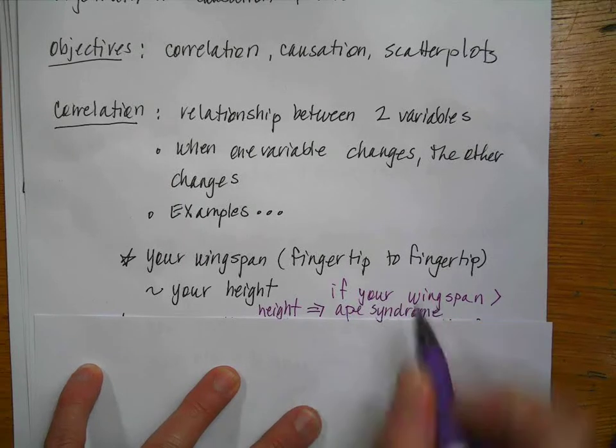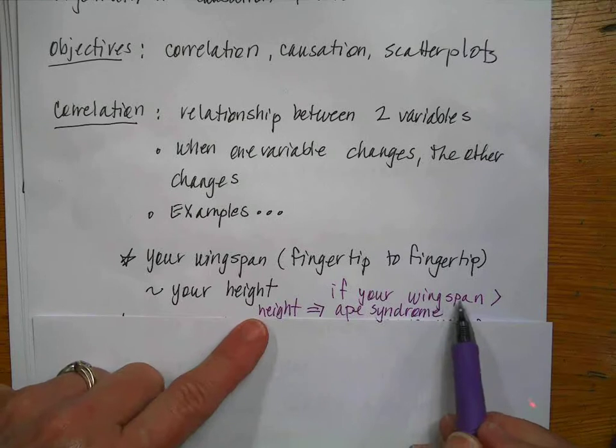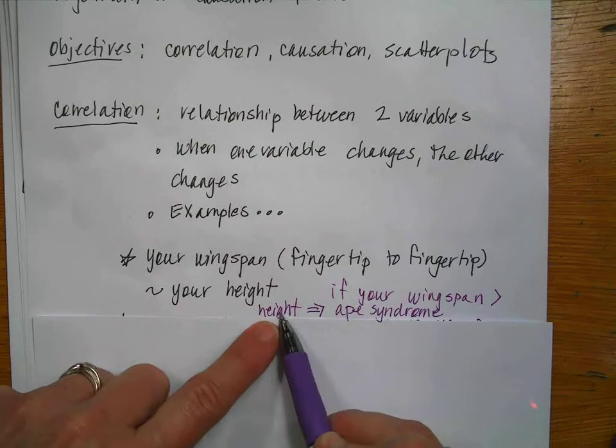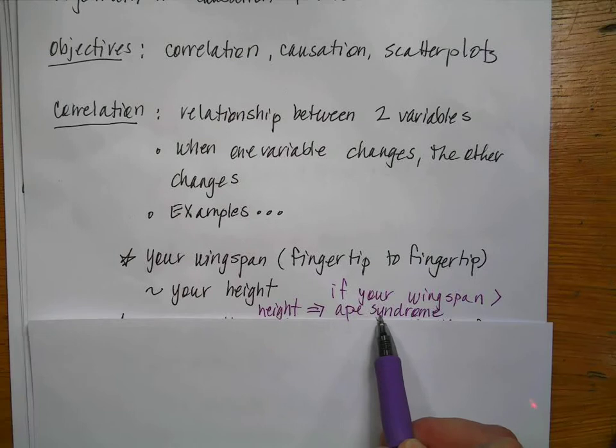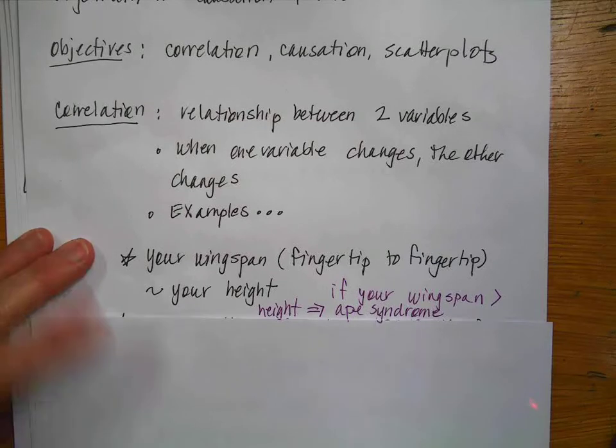I actually have a theory that, because this would be me, my wingspan is longer than my height even though I'm short. I have really long arms, which is ape syndrome. But I also think that might correlate to the sports that you choose. Basketball, ball sports, tennis, racquetball, or swimmers, because our arms are longer than we are tall.